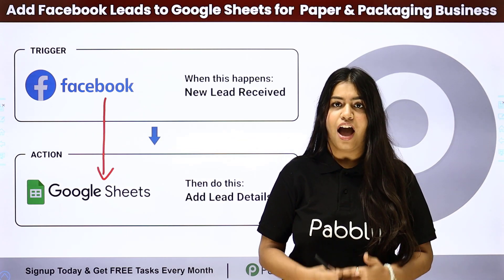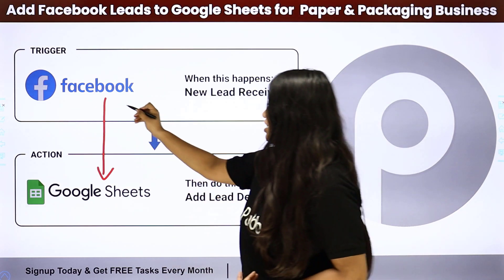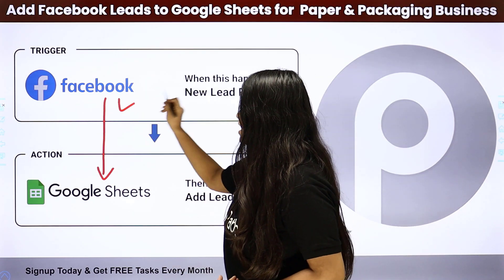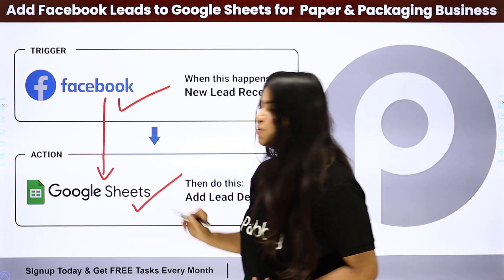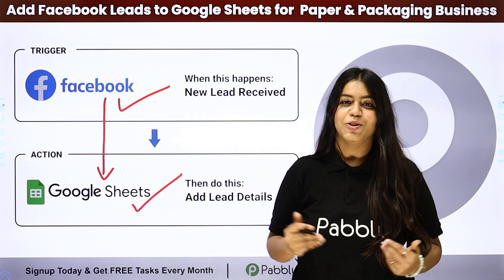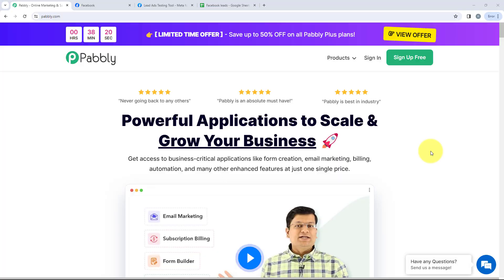In Pabbly Connect, we have Trigger and Action. For Trigger, we are going to use Facebook, and for Action, we are going to use Google Sheets. To know how to do this, let me take you to my computer screen.